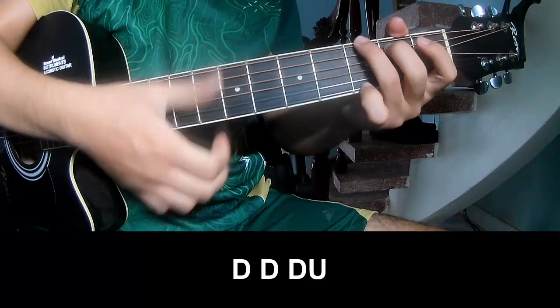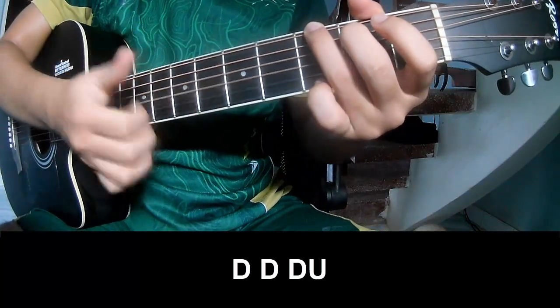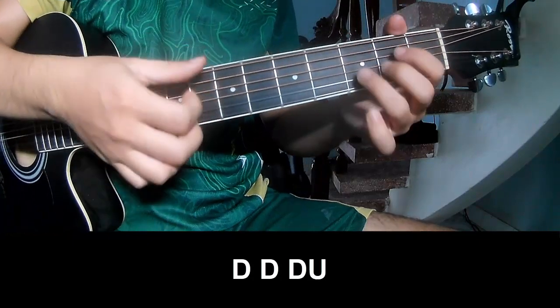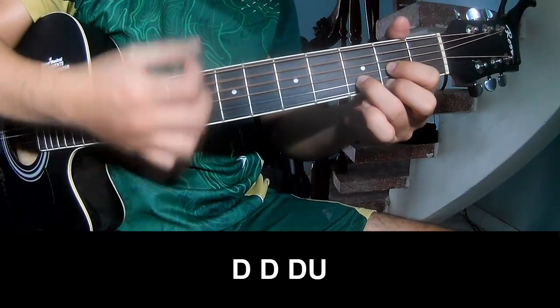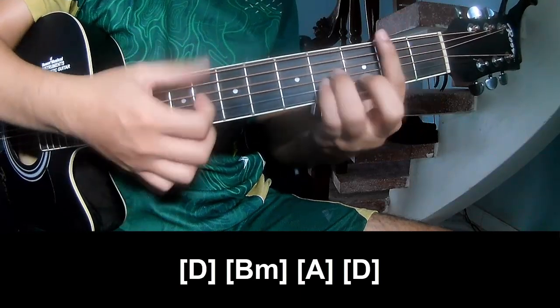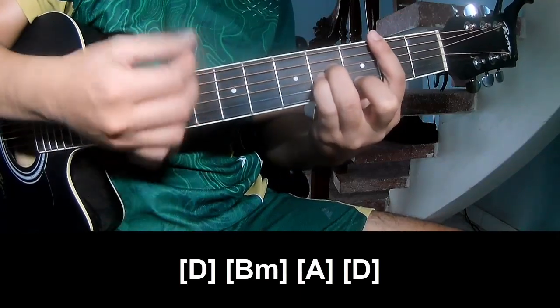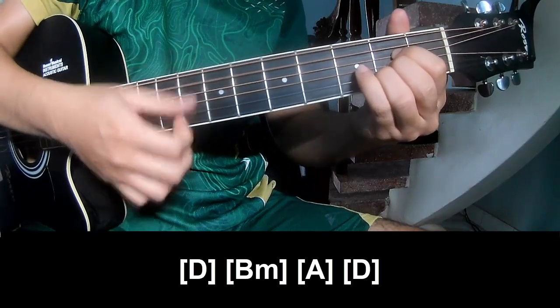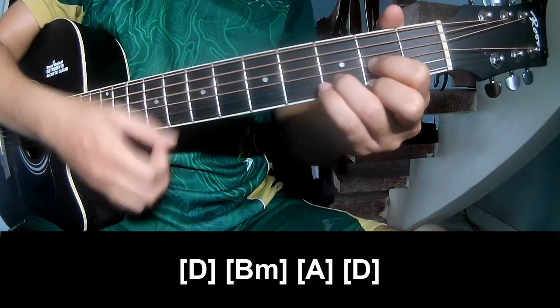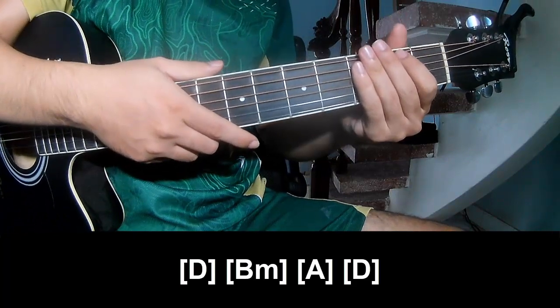For the first part, play D, Bm, A, D. Use the same strumming pattern for the verse.